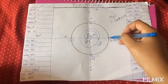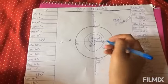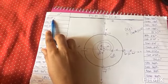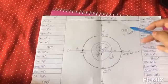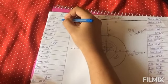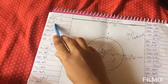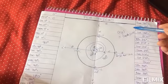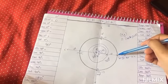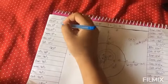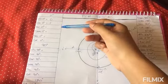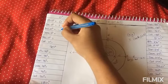Now let's calculate the value of trigonometric ratios for 0 degree. 0 degree is along this line. Sin 0 degree is the same as the value of the ordinate, that is the value of y. Here, value of y is 0. Therefore, sin 0 degree is also 0. Next, cos 0 degree is the same as the value of abscissa. The value of abscissa at point A is 1. Therefore, cos 0 degree is 1. We know tan 0 is nothing but sin 0 by cos 0. Therefore, 0 by 1 is nothing but 0 itself.